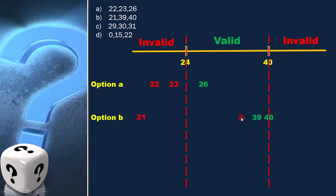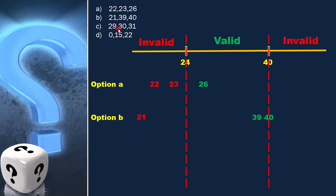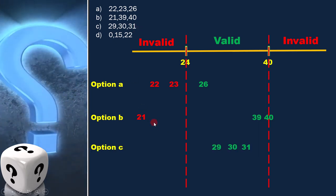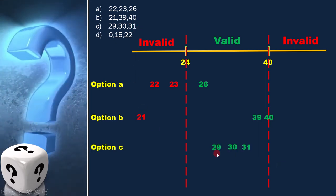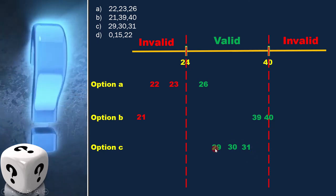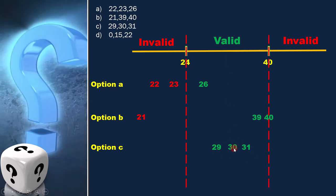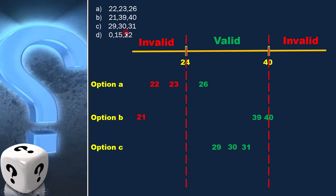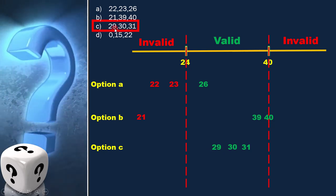Next option is 29, 30, and 31, and we can place them here, like this. And we can see that all the numbers are in the valid range. So, this is the correct answer. We can select option C as the answer.